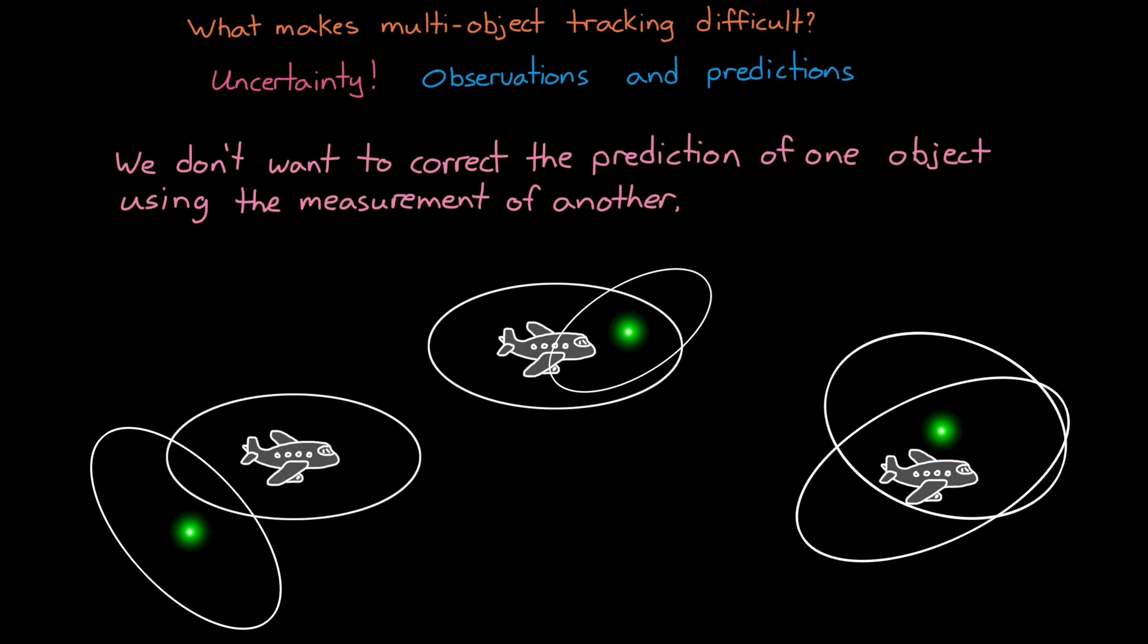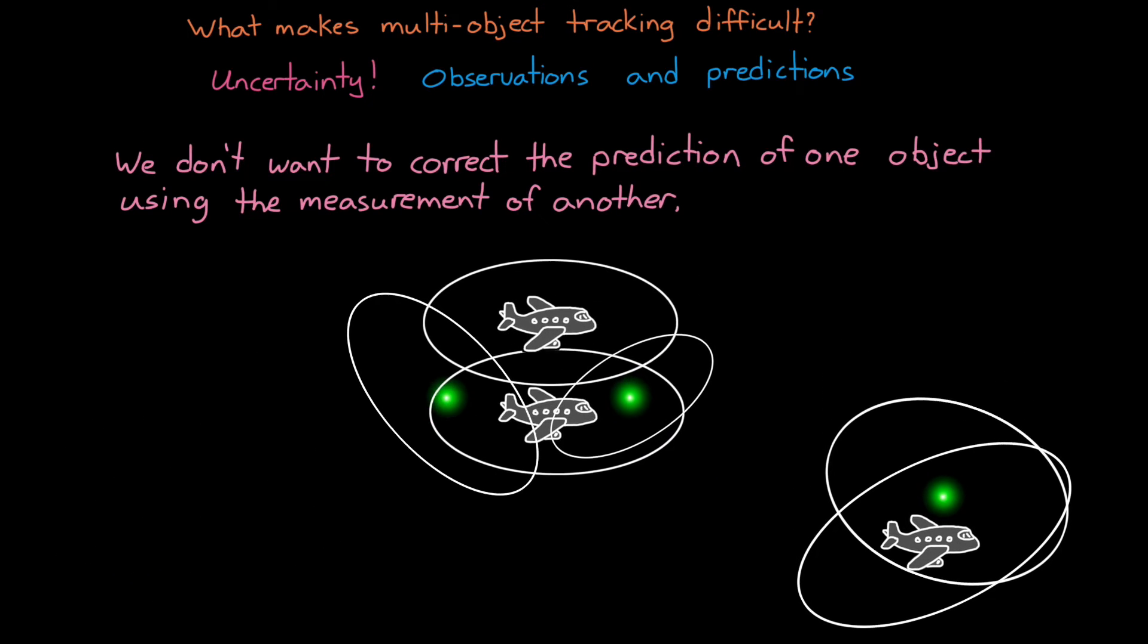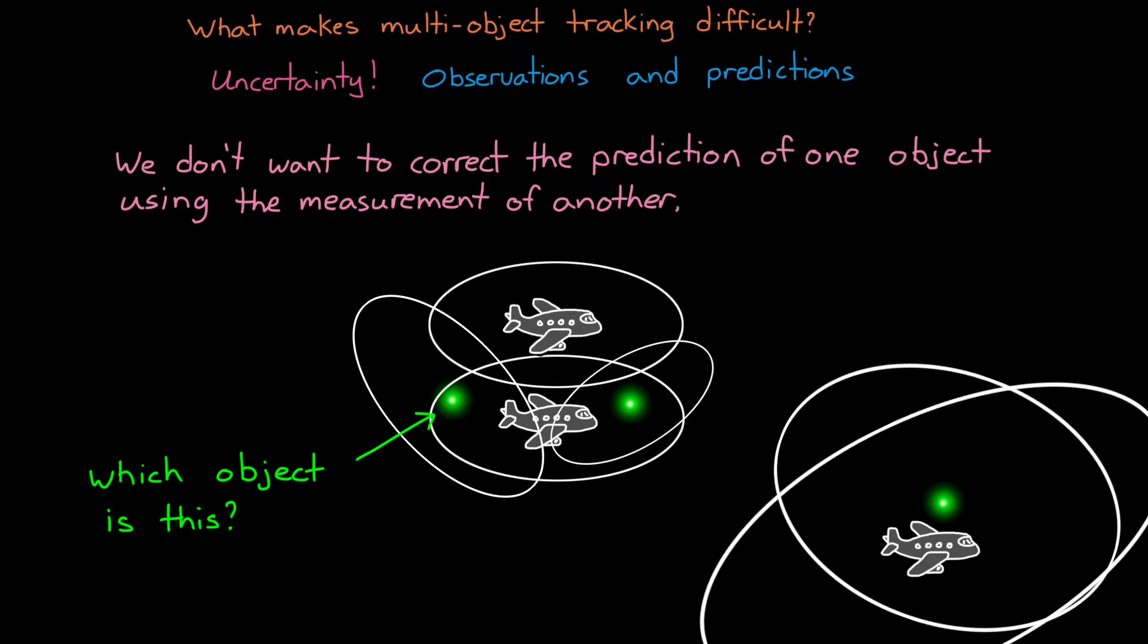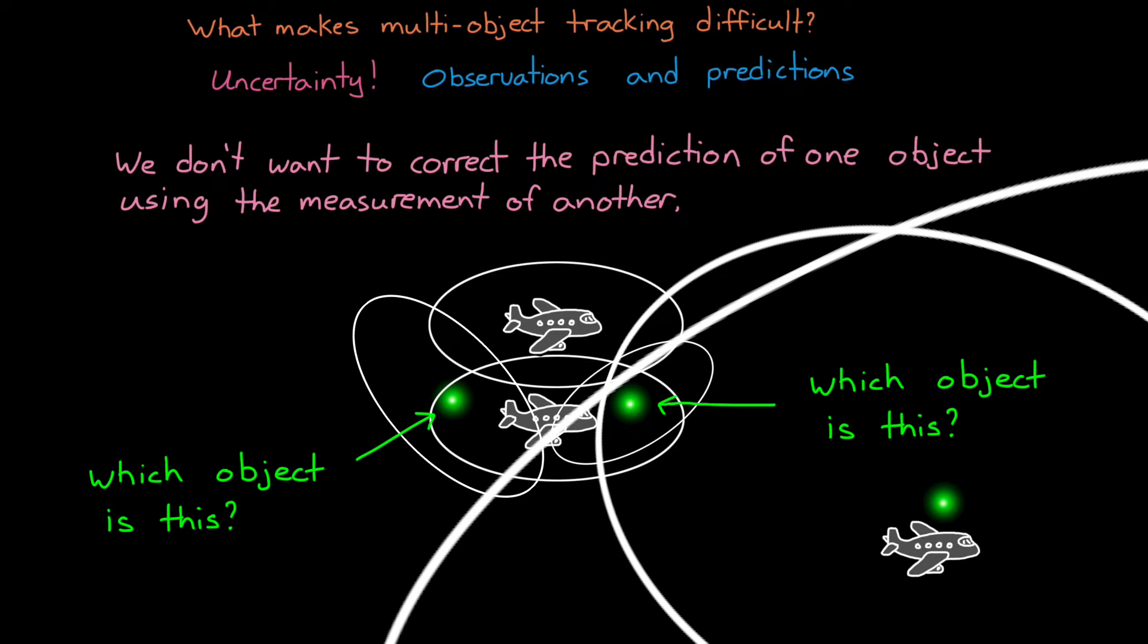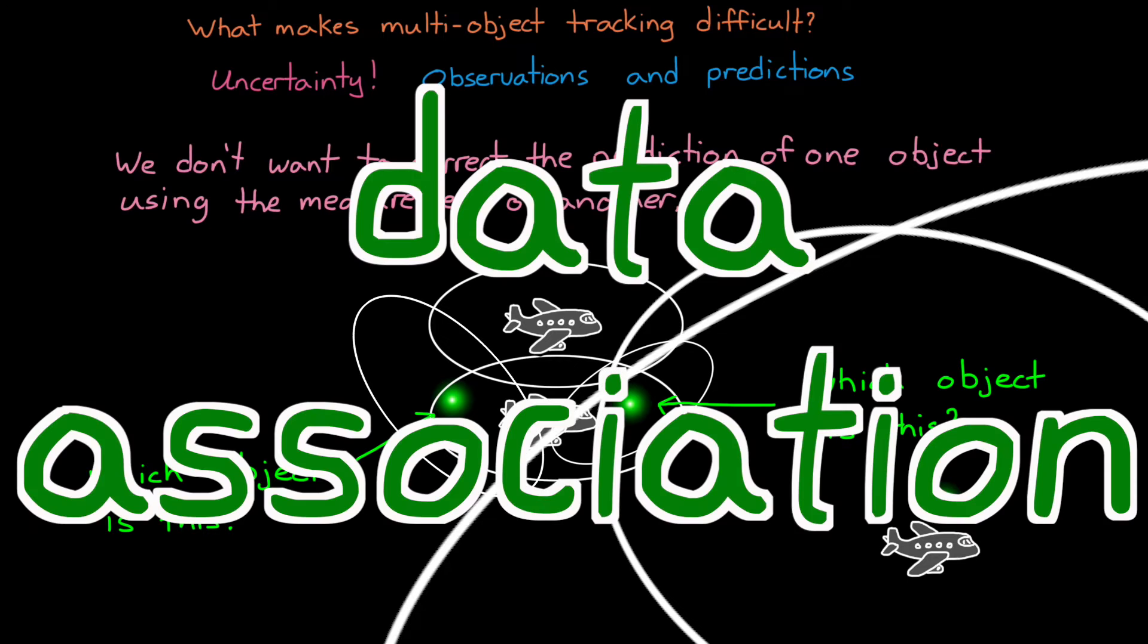The tricky part, however, comes when objects are close enough to each other, or our uncertainty is great enough that a measurement could be of more than one object. Now we have some figuring out to do, and this is the data association problem. We have to associate the detections with the right objects.